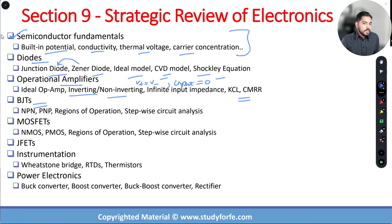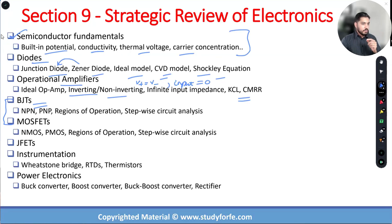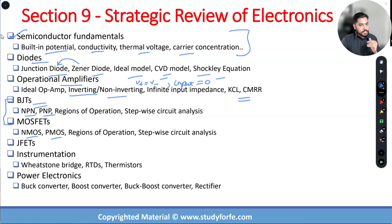Then we have BJTs. BJTs and MOSFETs are probably the two most demanding sections of electronics because each one has spinoffs — NPN and PNP for BJTs, and NMOS and PMOS for MOSFETs. There is a lot of overlap between them: they share two categories of device types, regions of operation, and both are transistors — two-junction devices, bipolar junction transistors.